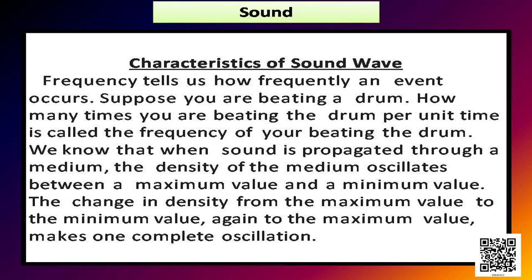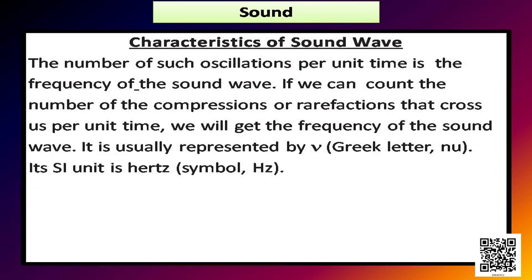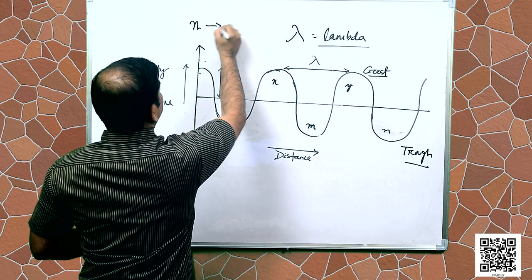When sound is propagated through a medium, the density of the medium oscillates between a maximum value and a minimum value. The change in density from maximum to minimum and back to maximum makes one complete oscillation. The number of such oscillations per unit time is the frequency of the sound wave. It is represented by ν (Greek letter nu) and its SI unit is Hertz.